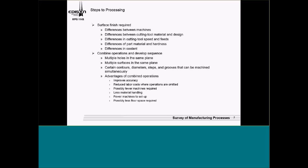We talk about cutting speeds and feeds. One formula you'll see: RPM = 4CS/D — a quick formula to come up with cutting speeds and RPMs. We look at differences in part material and hardness, which affects cutting speed, and differences in coolant such as soluble oils. We also look at combining operations in sequence — can I do multiple holes at the same plane, or multiple surfaces simultaneously? Advantages include less material handling, fewer machines required in the shop, reduced labor cost, and improved accuracy.